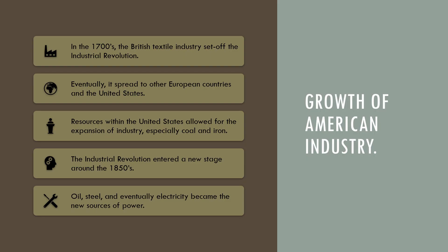So the growth of American industry. In the 1700s, the British textile industry had set off the Industrial Revolution, which eventually spread to other European countries and the United States. The Industrial Revolution involved a lot of machinery and steam power, and pretty much changed many countries, including the U.S., from agriculture-based work to industry and factory work. Resources within the United States — especially coal and iron — allowed for the expansion of industry in the late 1800s.